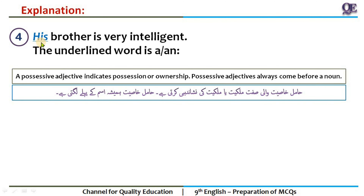Very simple — you will easily recognize them. His, her, their — these words are always possessive adjectives. They always come before the noun. 'Brother' was your noun, and 'his' came before it. That is the possessive adjective.